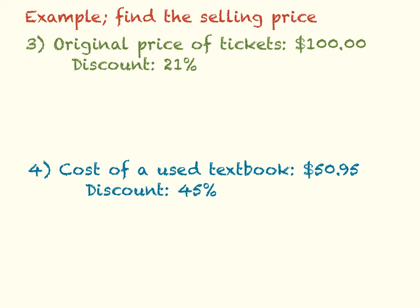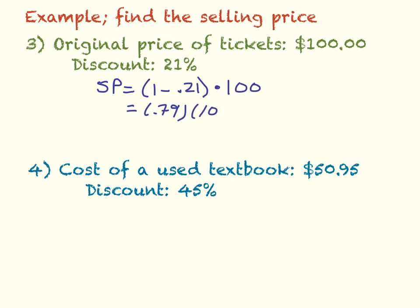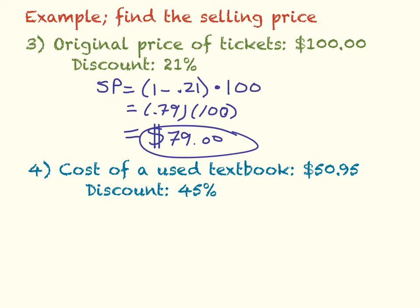Example 3: the original price of tickets is $100 and they're discounting the tickets 21%. To find the selling price, we take 1 minus the discount percent of 21%, which is 0.21, and multiply that times the original cost of the tickets, $100. So that gives me 0.79 times 100. When you type that into the calculator, you get the ticket price to be $79. That's your final answer.